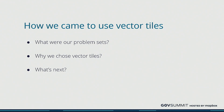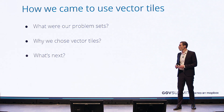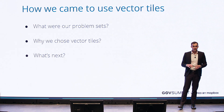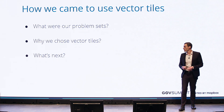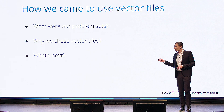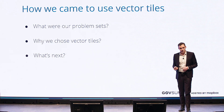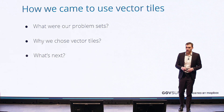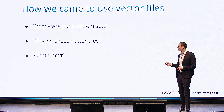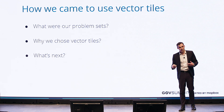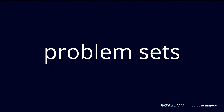So three things: I want to talk about a problem set that we're currently dealing with — the two problem sets that I think are really good examples for what we are trying to solve here — why vector tiles were the appropriate fix for this, and then what are we going to be planning next?